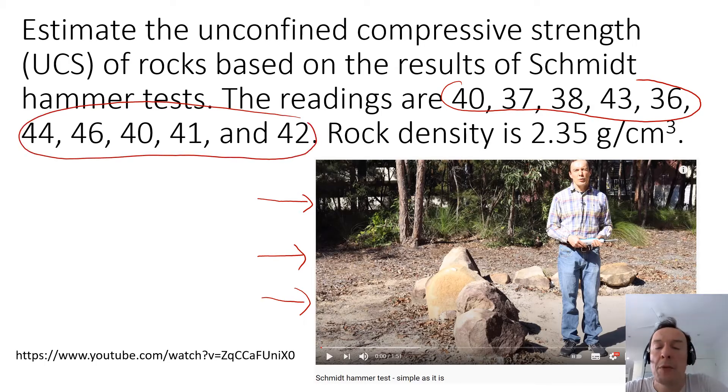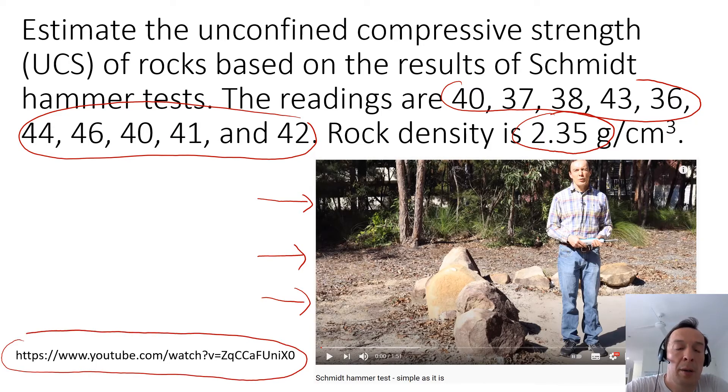The test is pretty simple but it requires about 10 measurements. You can see that we already have the data from 10 measurements - we have 10 different values. On top of that, we have the density of rock which is given, it's 2.35 grams per cubic centimeter. Sometimes when we do this test in the field we don't know the density of the rock, and I will show you what we can do without the knowledge of the density.